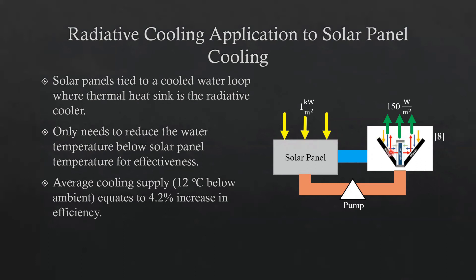We can actually do that by using a radiative cooling device. This is the design as shown from reference eight. What we're doing here is tying the cooling provided by this device to the solar panel by a cooled water loop. The results for this device are published to be 12 degrees C below ambient conditions, and using our temperature coefficient from before, that relates to a 4% increase in efficiency. So by decreasing the temperature of the solar panel through the reduction of this energy, we can, on average, get a 4% increase in solar panel efficiency.